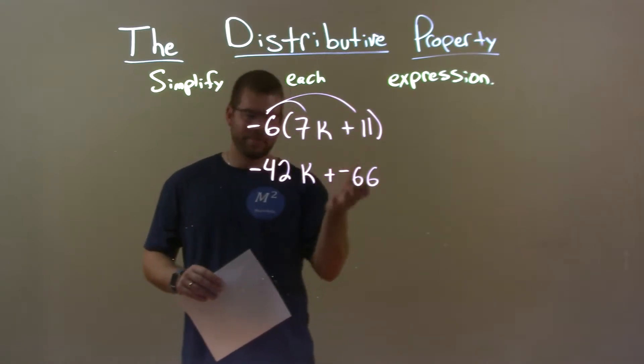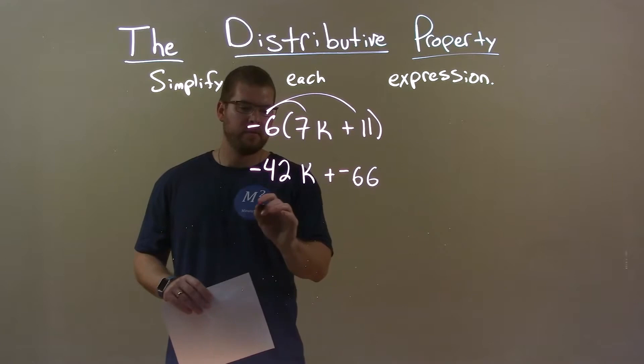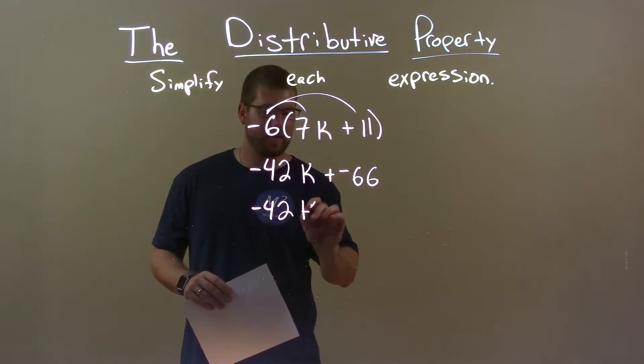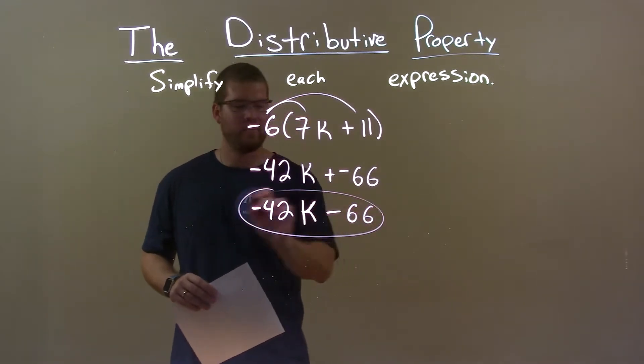Now, I don't necessarily want to write plus a negative at the end and so we know that's really just subtraction. So we can rewrite this, negative 42k, oops, don't forget the k, there we go, I made it work, minus 66 and now we have our final answer.